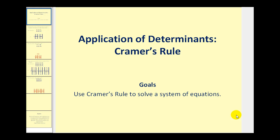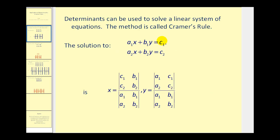Welcome to a video on Cramer's Rule. This is a way of solving a system of equations using determinants. Let's first take a look at a system of two equations with two unknowns. Notice the a's are the coefficients of the x terms, the b's are the coefficients of the y terms, and the c's are the constants.